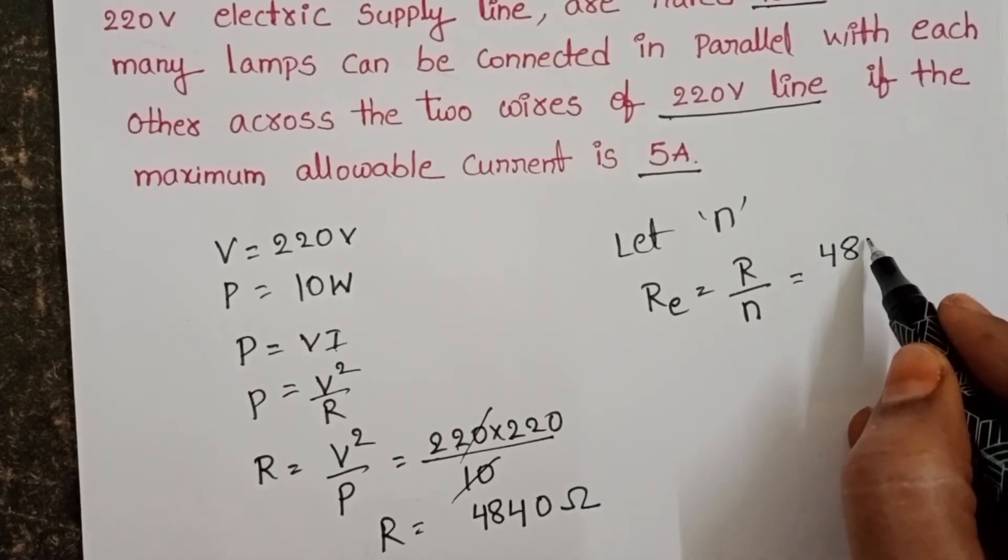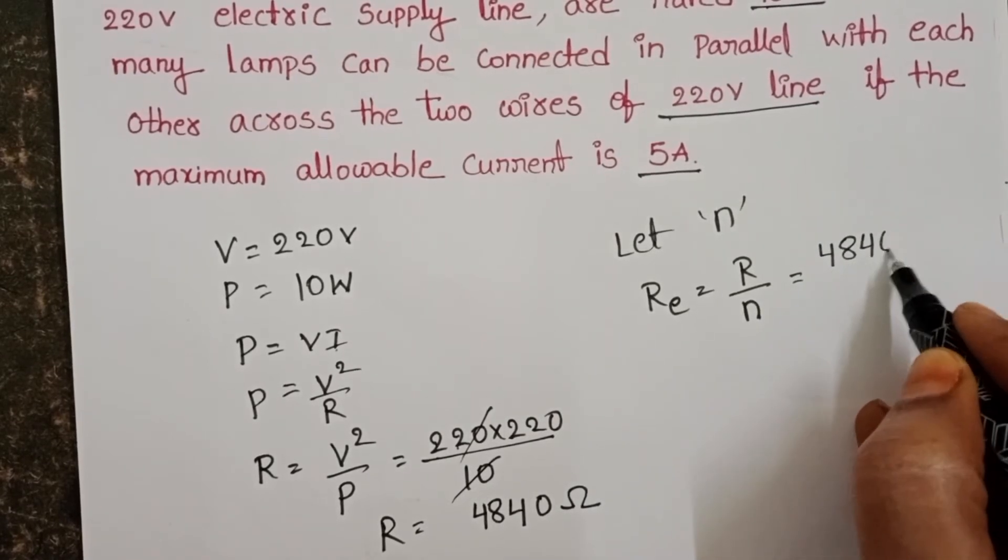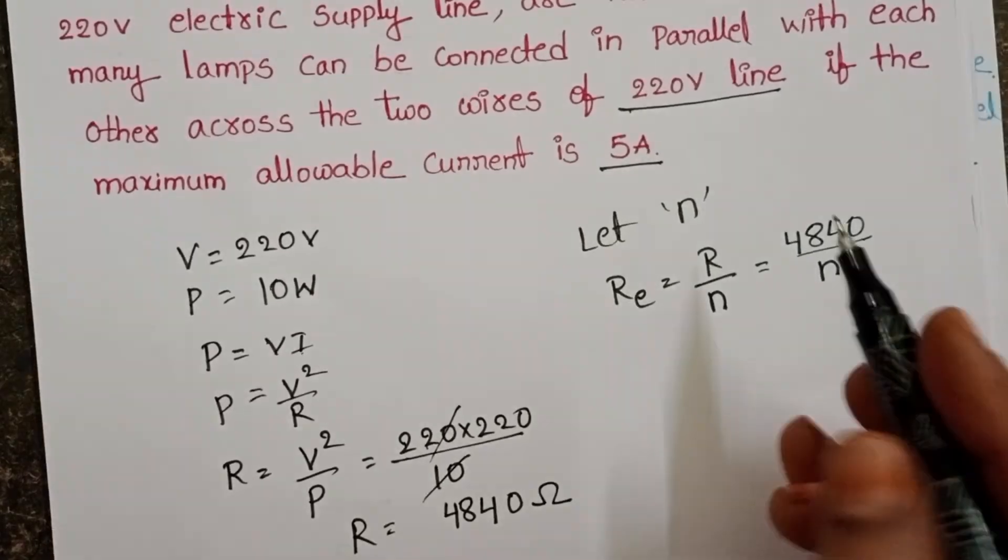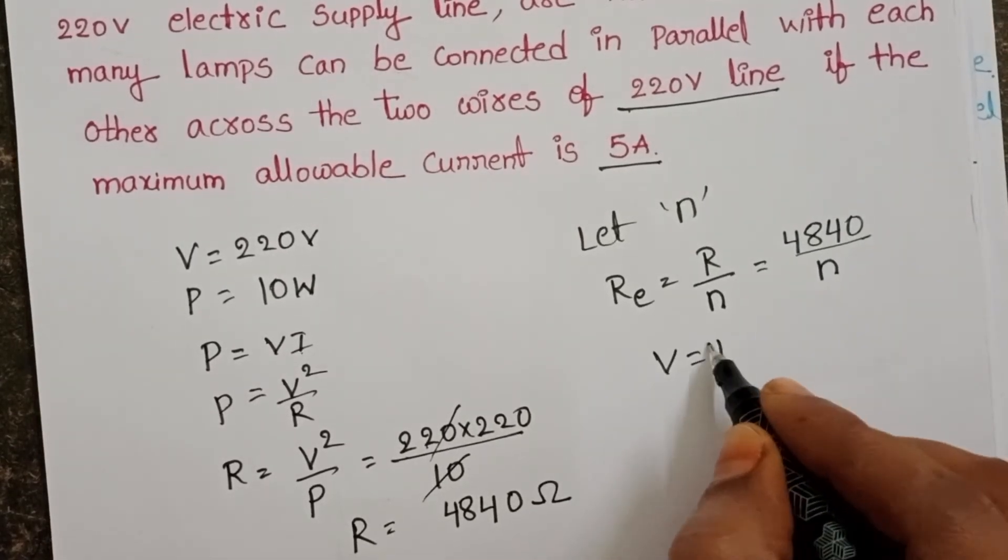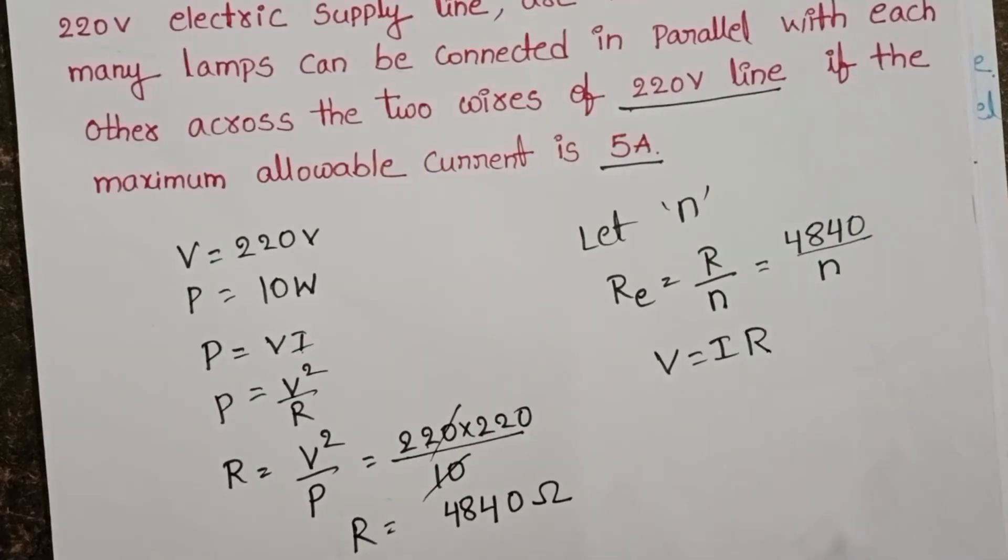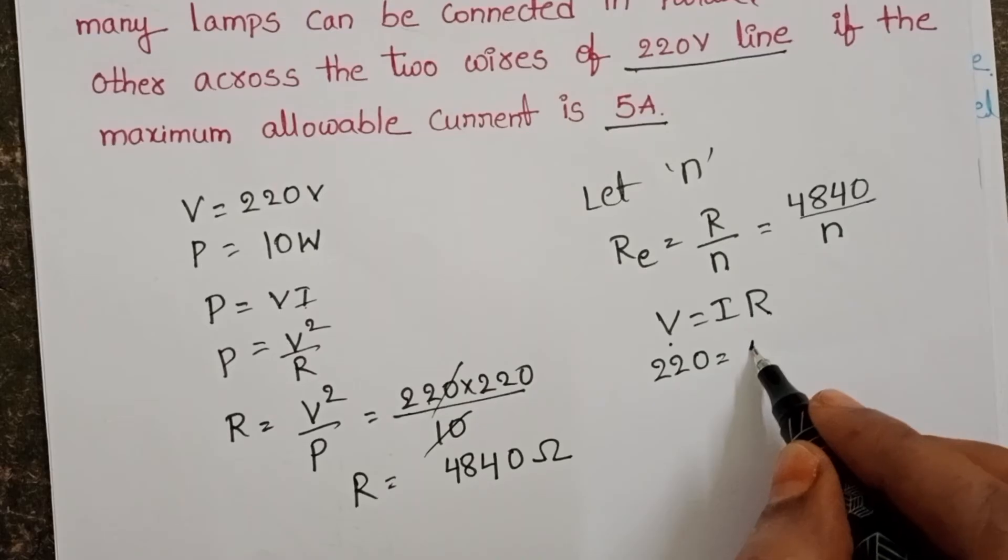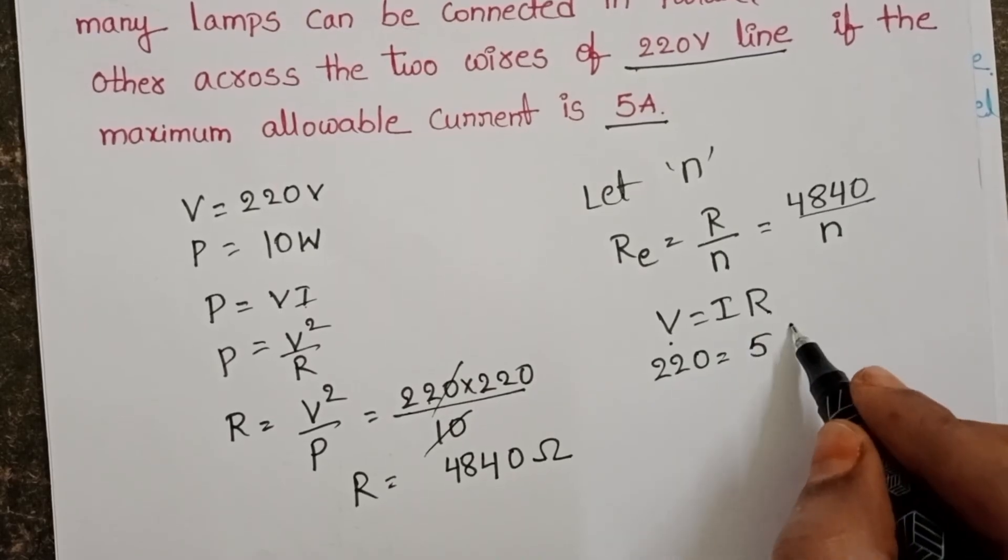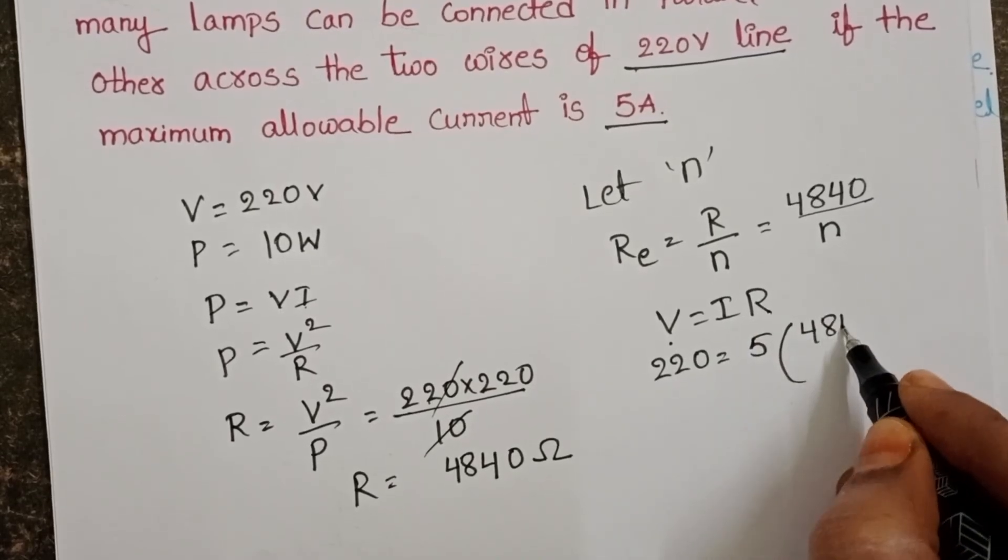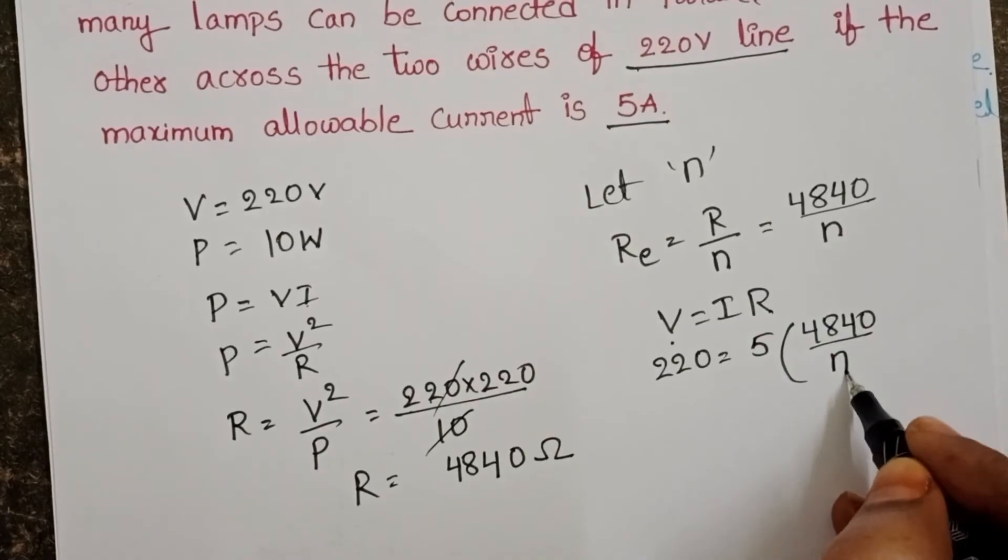Each bulb of resistance is 4840 by n. Now, take Ohm's law: V equals IR. In place of V, 220; the given current is 5. In place of resistance, 4840 by n.